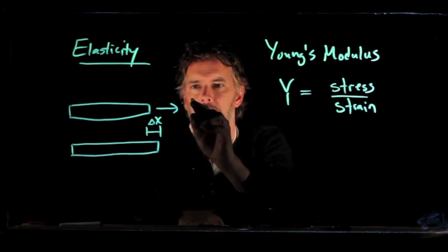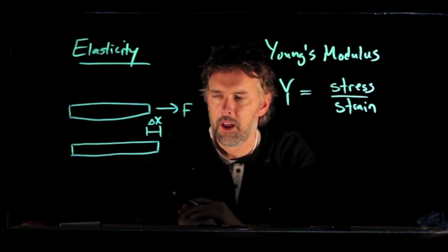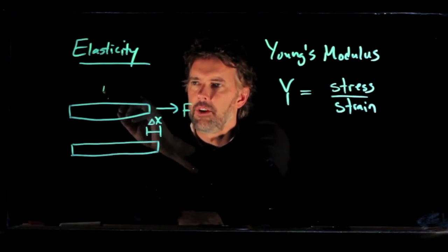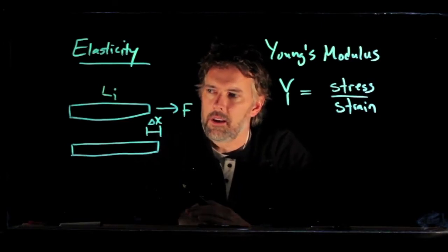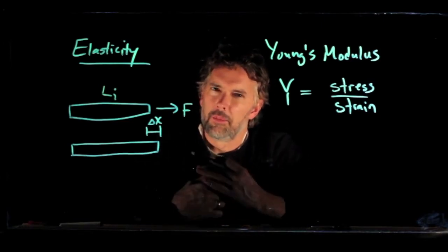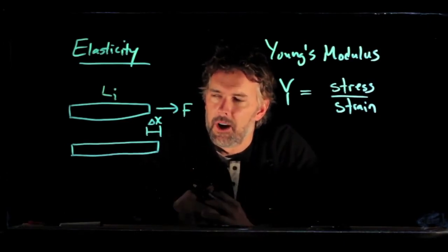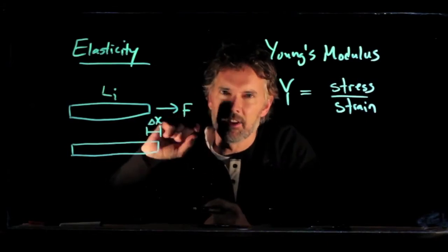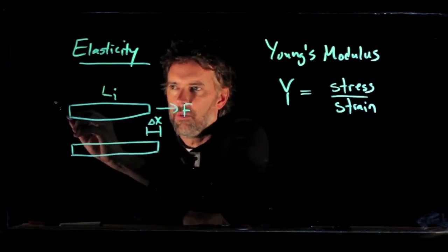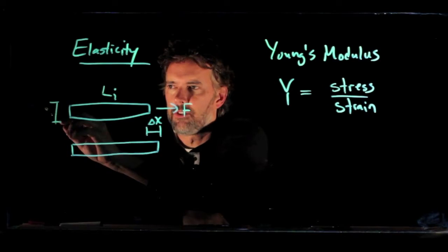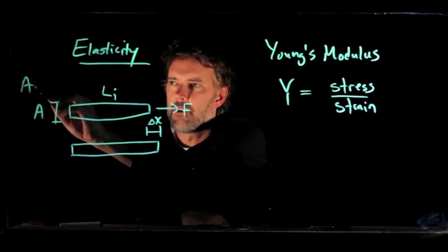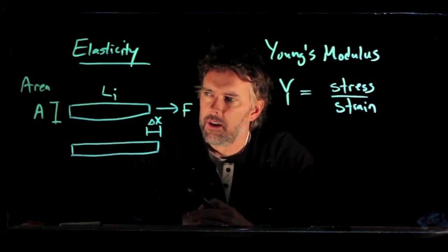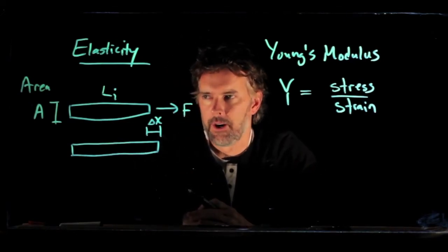So if we think about this steel rod for a second, let's give it some parameters. We're going to say that we're going to pull on it with a force F. We're going to say that it started with a length L initial. And we also have to think a little bit about how big that steel rod is, right? How thick is it? How wide is it? So we give it a cross-sectional area A. This is an area, not just a diameter of the rod.